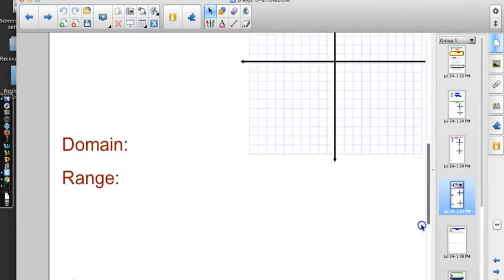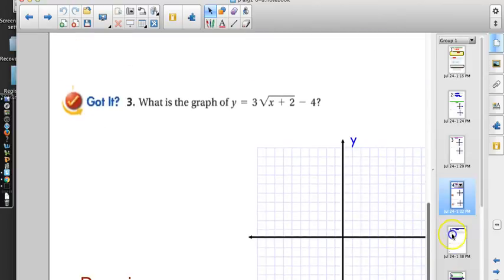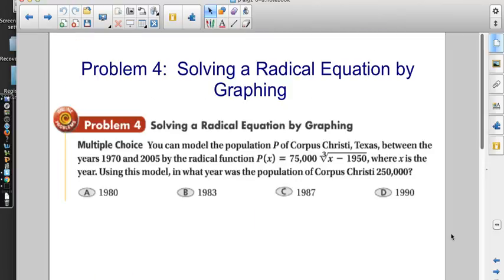We went ahead and did the parent functions and transformations. We're right at the word problem. This is the one you're going to want a graphing calculator for. When we get to large numbers and word problems involving radicals, that's exactly what the calculator is for - the stuff we wouldn't necessarily want to do by hand.